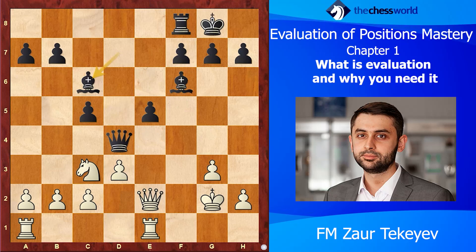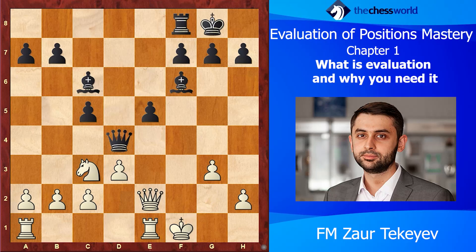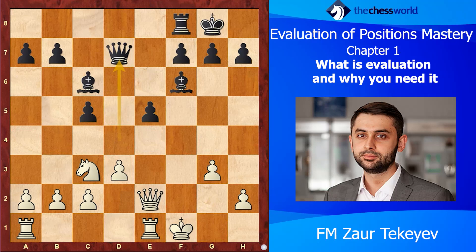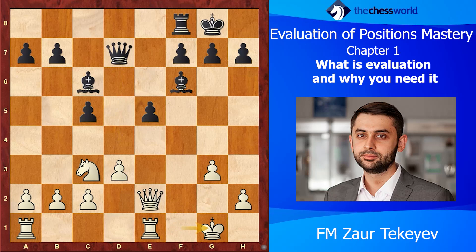All of our pieces are happy now. After King f1, John Nunn once again found a weak point in White's position. You can also pause the video and try to find the move he played. He played Queen d7, aiming to h3 — probably not the absolute best move, but very logical. After King g1, he once again played in a brilliant way.